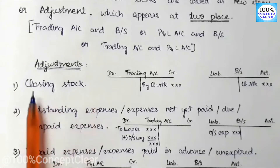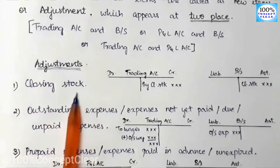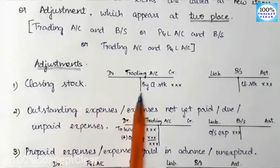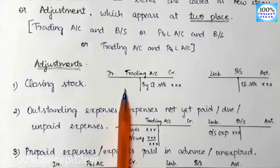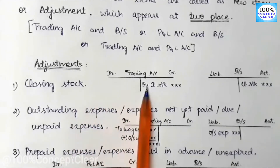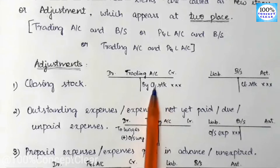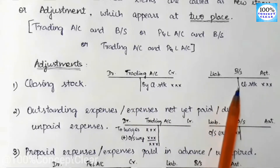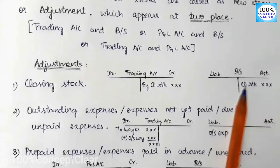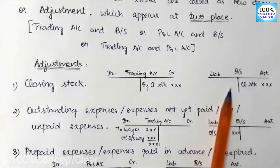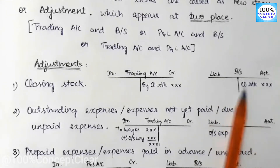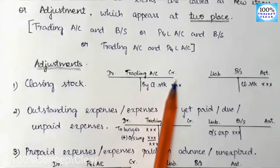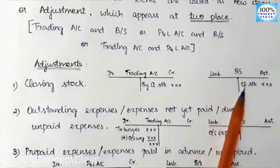The first item is closing stock. In the maximum final accounts, closing stock appears in the trading account. At the end of the accounting year, the stock remaining unsold is called closing stock. The closing stock amount appears in the trading account. Closing stock also appears on the balance sheet on the asset side, because we will use this stock next year — that is why it is treated as an asset.